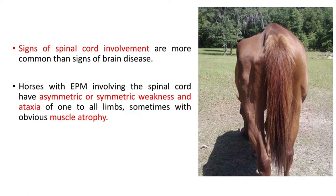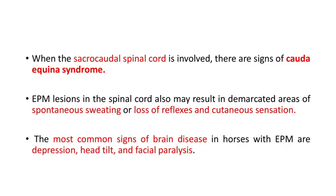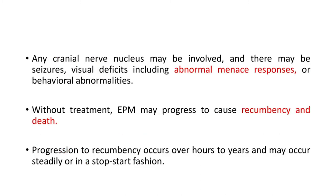You can see the asymmetric muscle atrophy of the left hindquarter of the horse in this picture. When the sacrocaudal spinal cord is involved, there are signs of cauda equina syndrome. EPM lesions in the spinal cord may also result in demarcated areas of spontaneous sweating or loss of reflexes and cutaneous sensation. The most common signs of brain disease in horses with EPM are depression, head tilt, and facial paralysis.